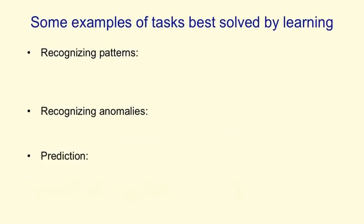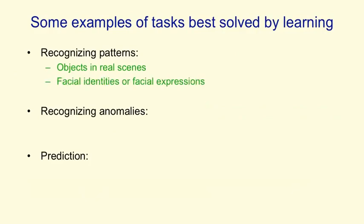Some examples of the things that are best done by using a learning algorithm are recognising patterns — for example, objects in real scenes, or the identities or expressions of people's faces, or spoken words.